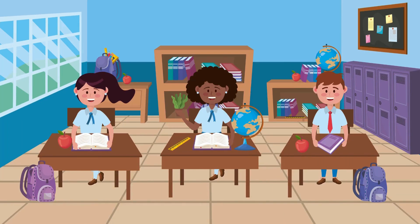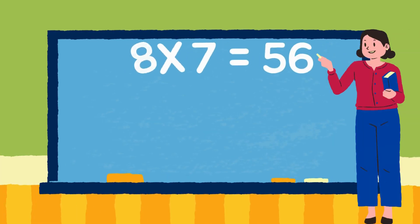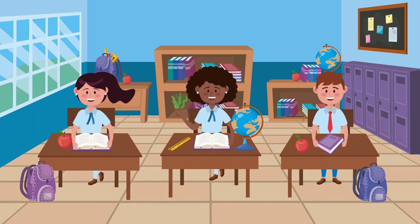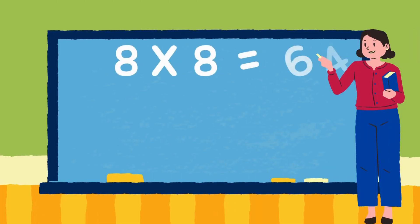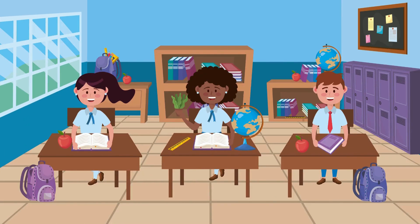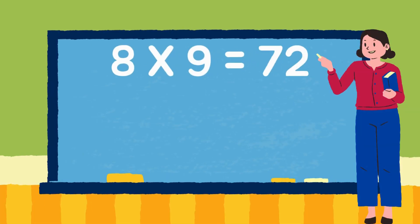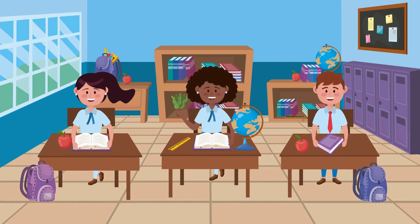8 sixes are 48. 8 sevens are 56. 8 eights are 64. 8 nines are 72.